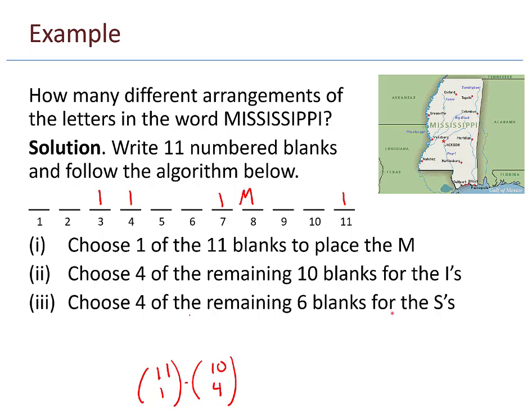Moving on, step 3. Choose 4 of the remaining 6 blanks for the s's. There are 4 s's in Mississippi. S, s, s, s. There we go. I chose 4 of those. How many ways could I have done that? 6 blanks. Choose 4.